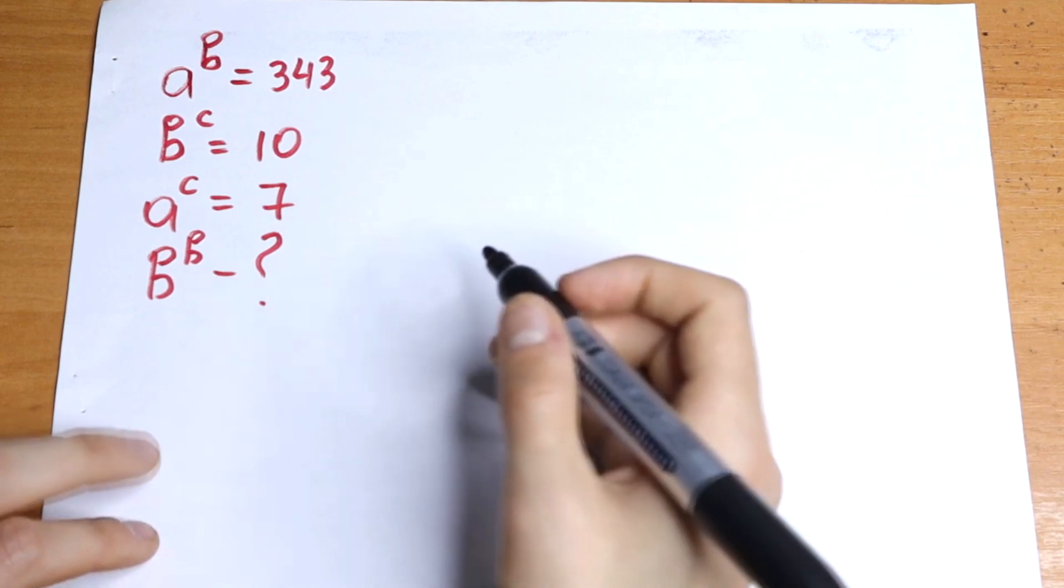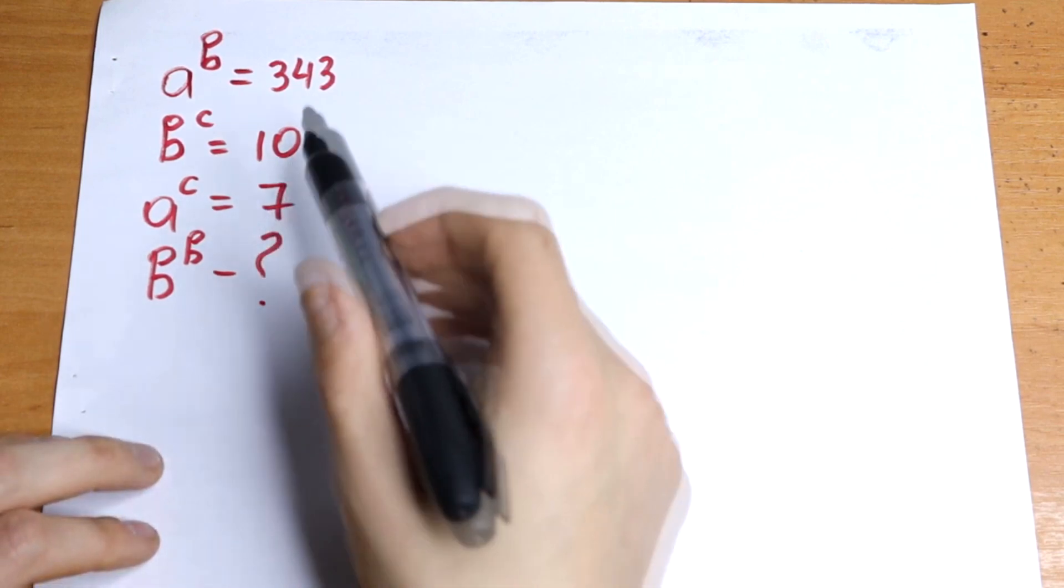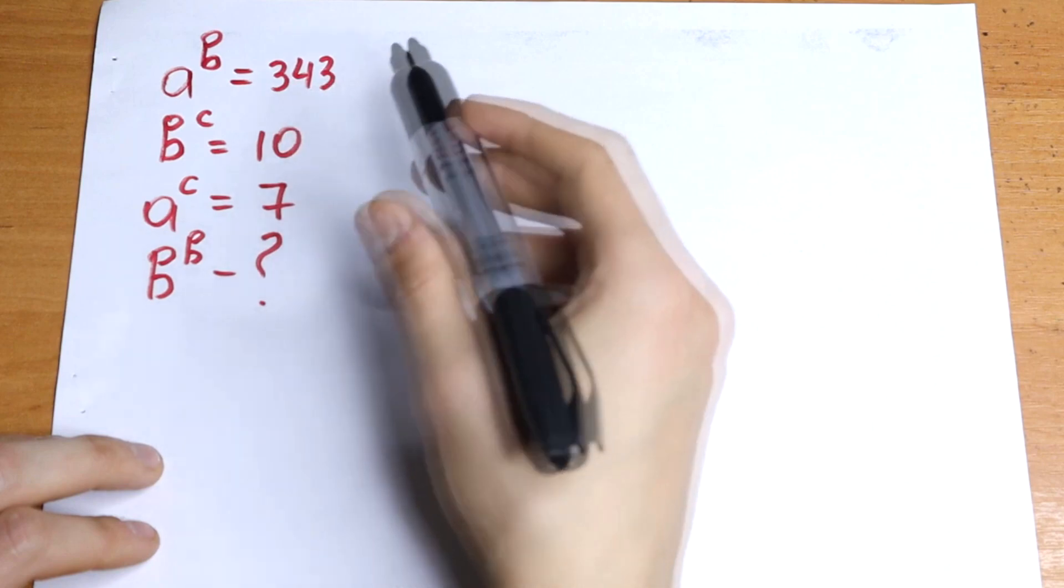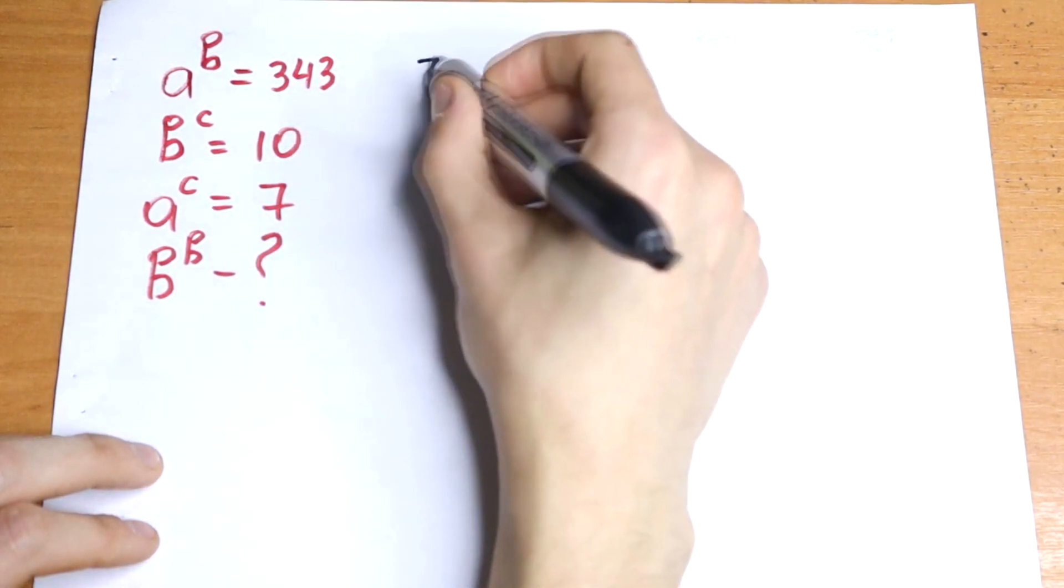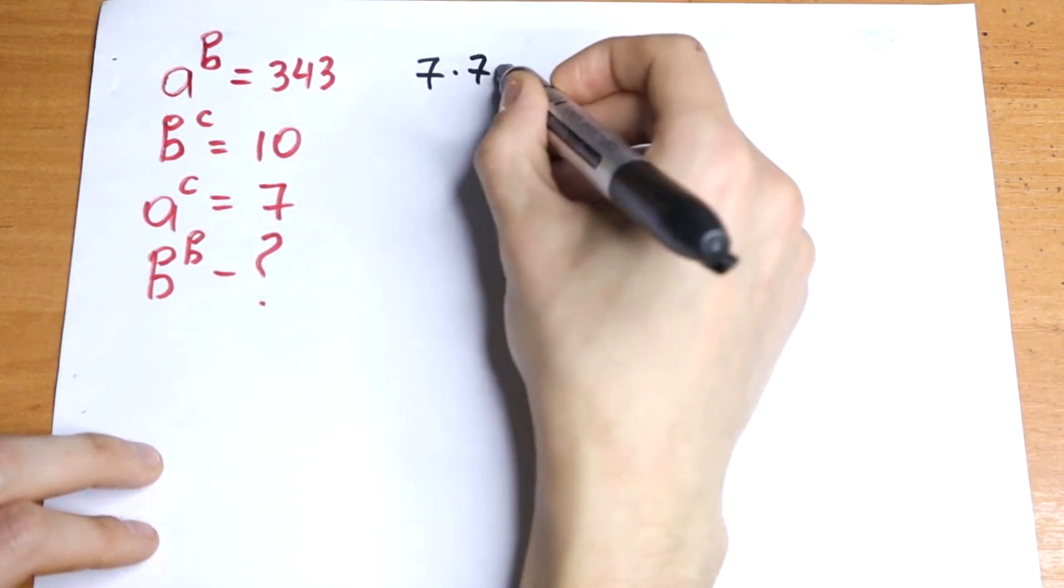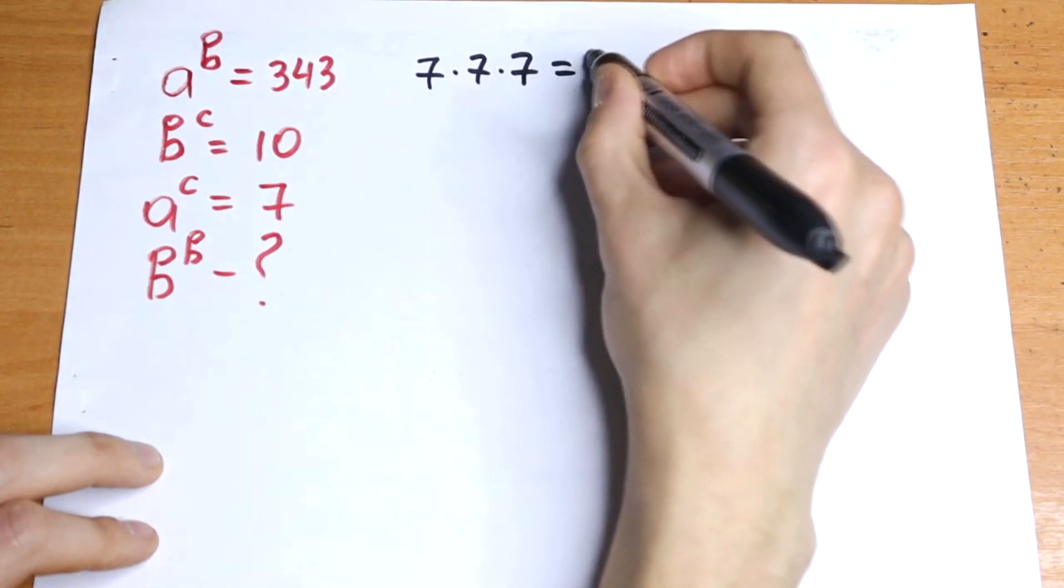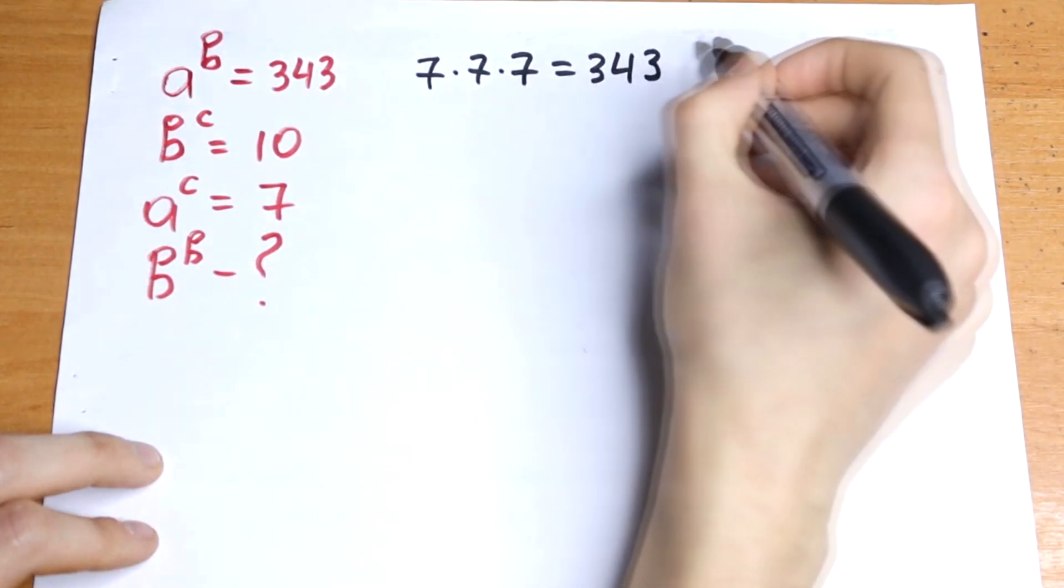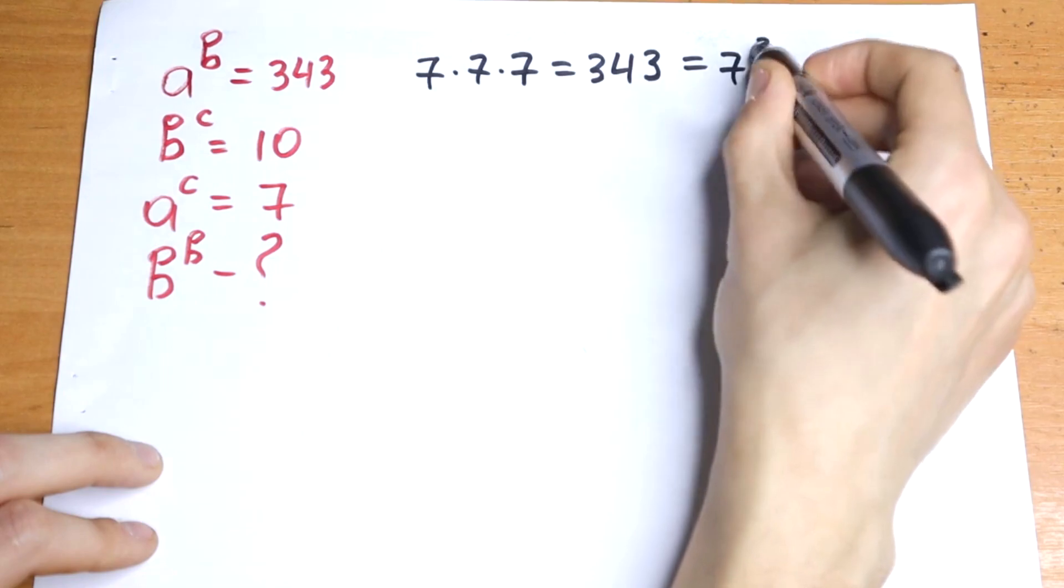I want to suggest a real quick trick right here because we have 7 and for sure this 343 we can write as 7 times 7 times 7. So this will be equal to 343 and this will be 7 cubed.